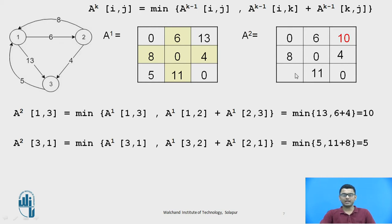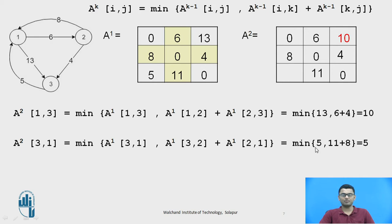For A2[3][1]: minimum of A1[3][1] which is 5, or A1[3][2] + A1[2][1] which is 11 + 8 = 19. The minimum between the two values is 5, so we retain the value as 5.